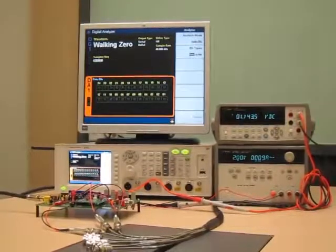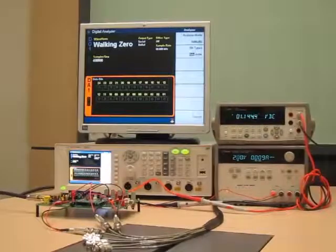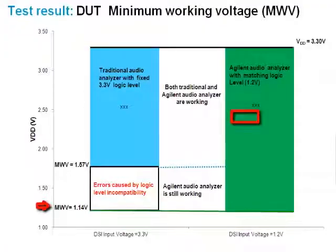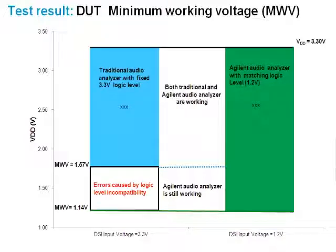So the question is: why is the test result different? Which one is the correct measurement? This chart is based on our test results. It clearly shows that with only a change of the input logic level from 3.3V to 1.2V — to match the DUT's output — the minimum voltage improved from 1.57V to 1.14V. So let me explain why this happens. When we set the audio analyzer input logic level to 3.3V, which is a fixed setting found on most audio analyzers, the DUT appears to stop working at 1.57V. Is this true? The answer is a resounding no.